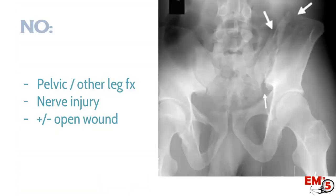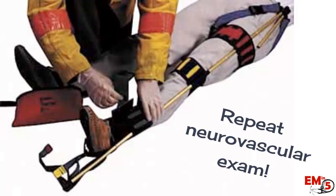When can you not put a traction splint on? Think about if there's any other leg fracture or pelvic fracture, if you're suspicious for a nerve injury, or if it's an open or contaminated wound. And make sure anytime you put the splint on or move the patient significantly to repeat a neurovascular exam.